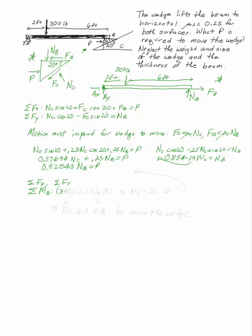If I look at the sum of the moments at A, I have 300 times 2, clockwise, and NB times 8, counterclockwise. Now I can solve for NB. NB is 75 pounds. And I can plug that back into my equations for the wedge and solve and I get P is 69.4 pounds to move the wedge.